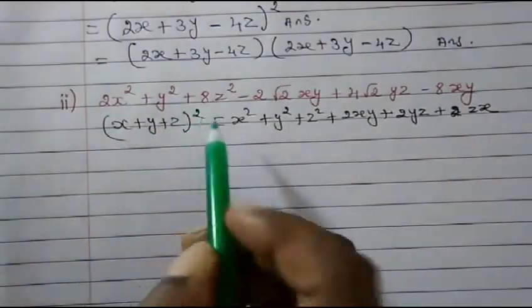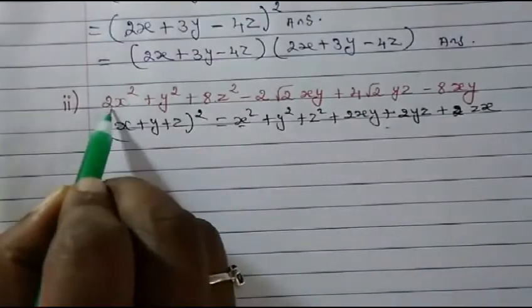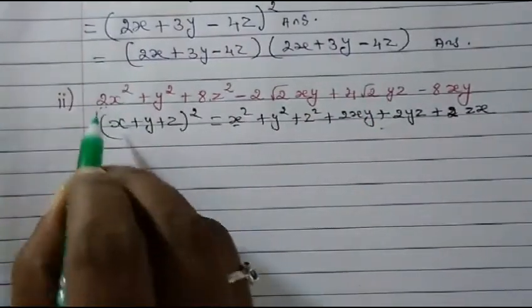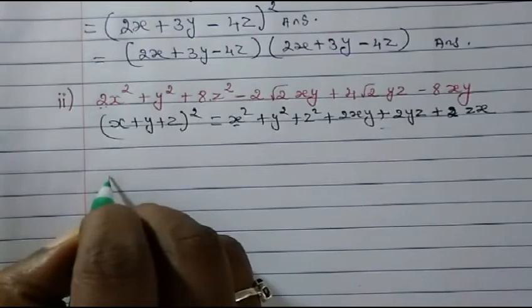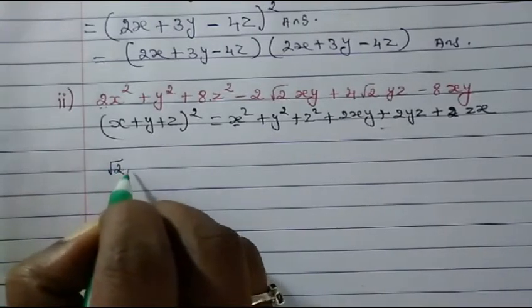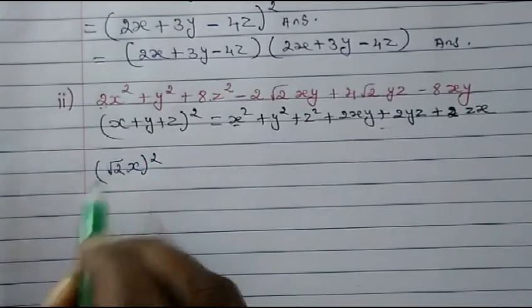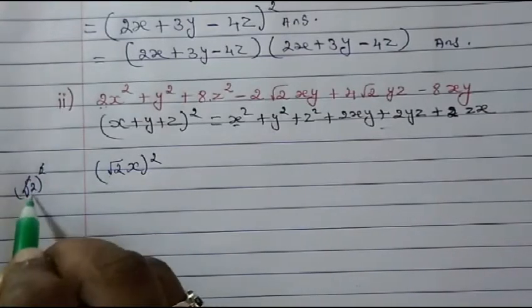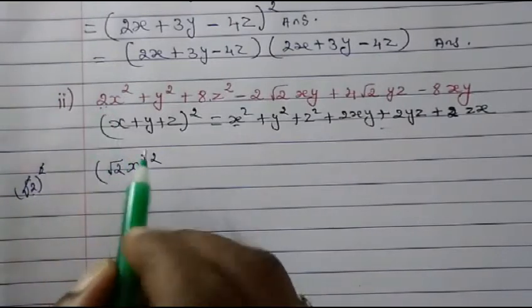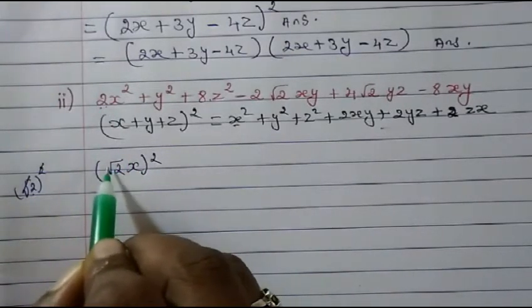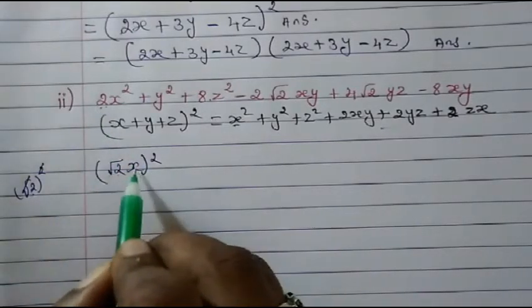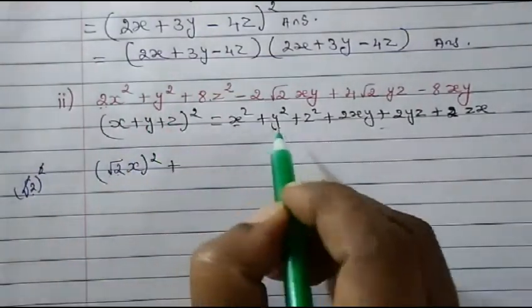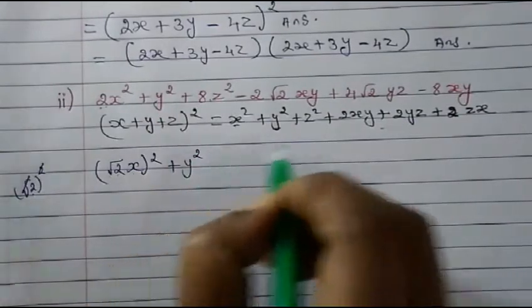So same way let's reduce the form so that we get it in the identity's form properly. For x square: we have 2x square. Can we write it as (√2 · x) whole square? Yes — when we square √2 we get 2, and x square stays, so 2x square is written as (√2 x) whole square. For y square, we have y square only — that stays as y square.